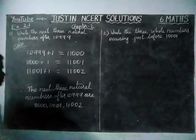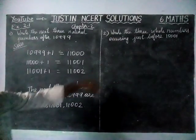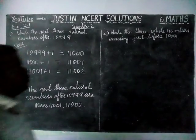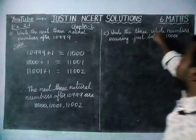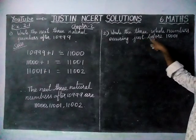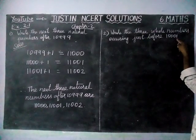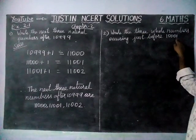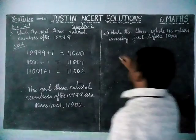Next, in the same way, they ask us to find the predecessor — the previous number. Write the 3 whole numbers occurring just before 100001. So this is, we have to find the predecessor.